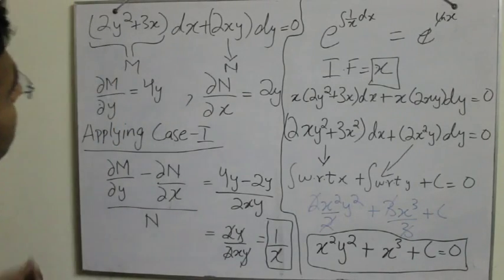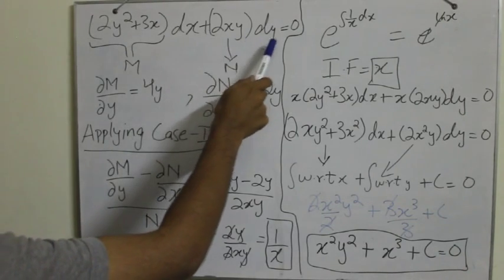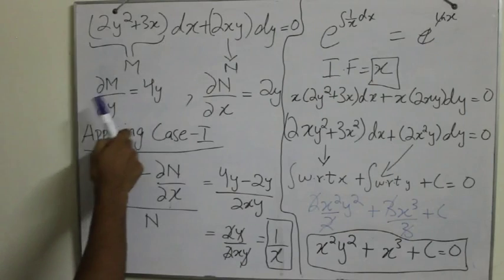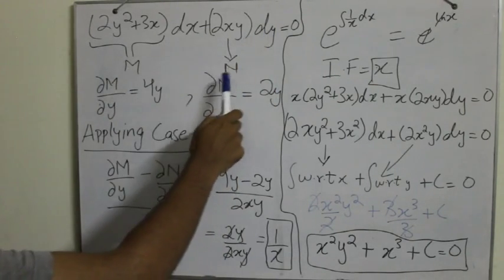Here is an example. So 2y squared plus 3x dx plus 2xy dy is equal to 0. So the term that is with dx, I name that as M and the term that is with dy, I name it as N.